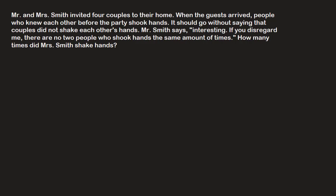So let's look at how you do this. Mr. and Mrs. Smith invited four couples to their home, so four couples plus Mr. and Mrs. Smith means we have 10 people. Let's just represent these 10 people by the amount of hands they shook — let's say that these dots are our 10 people. So we have 1, 2, 3, 4, 5, 6, 7, 8, 9, 10.